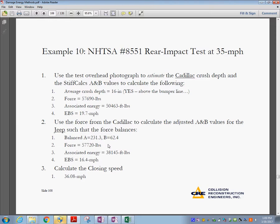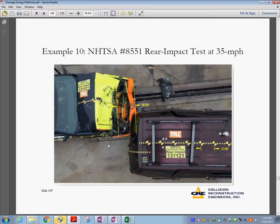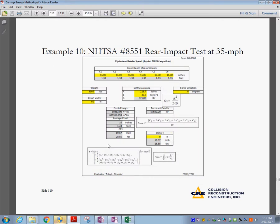Use the force from the Cadillac to calculate the adjusted A and B values for the Jeep so that the force is balanced. It means that the momentum as well as the force would have to be equal and opposite in direction. The product mass times velocity. Because of the conservation of momentum, if you have big mass, low velocity, with another car that has small mass, high velocity, we have to equate this.